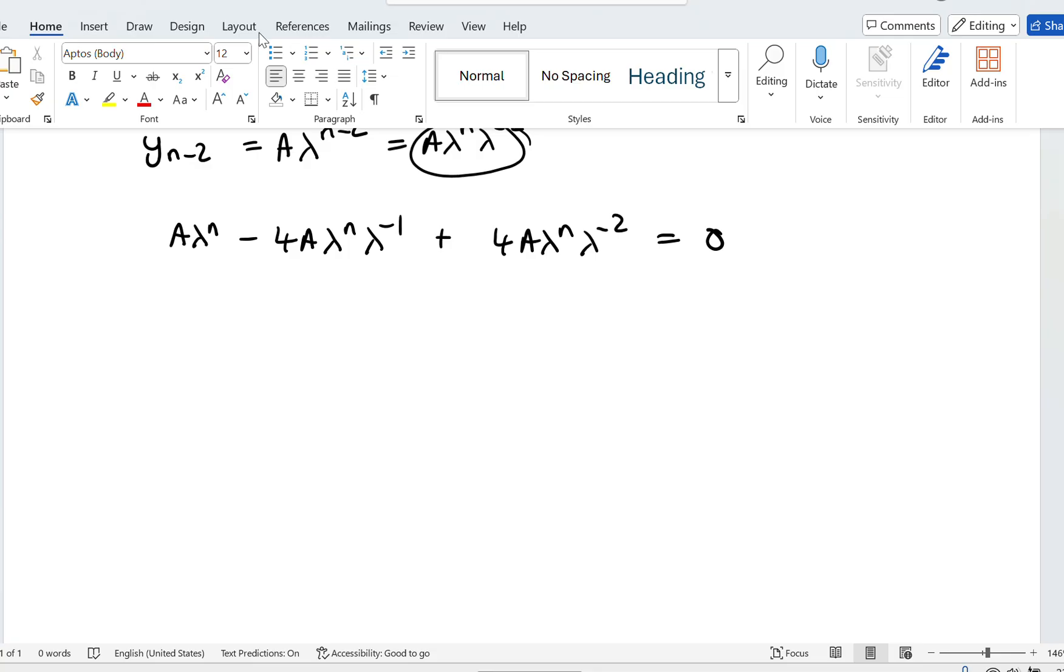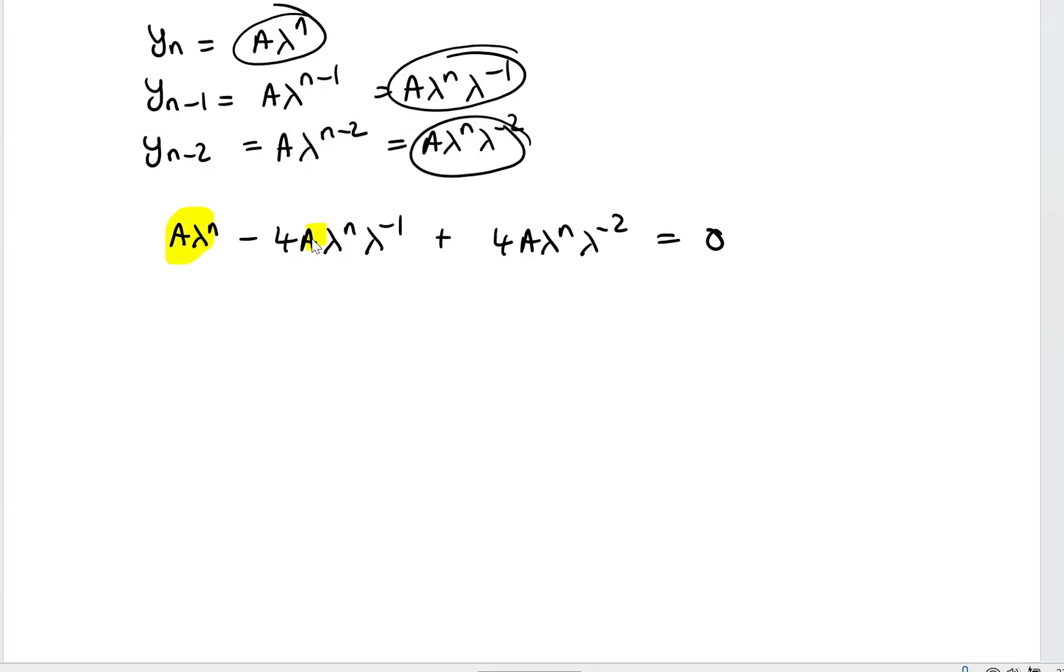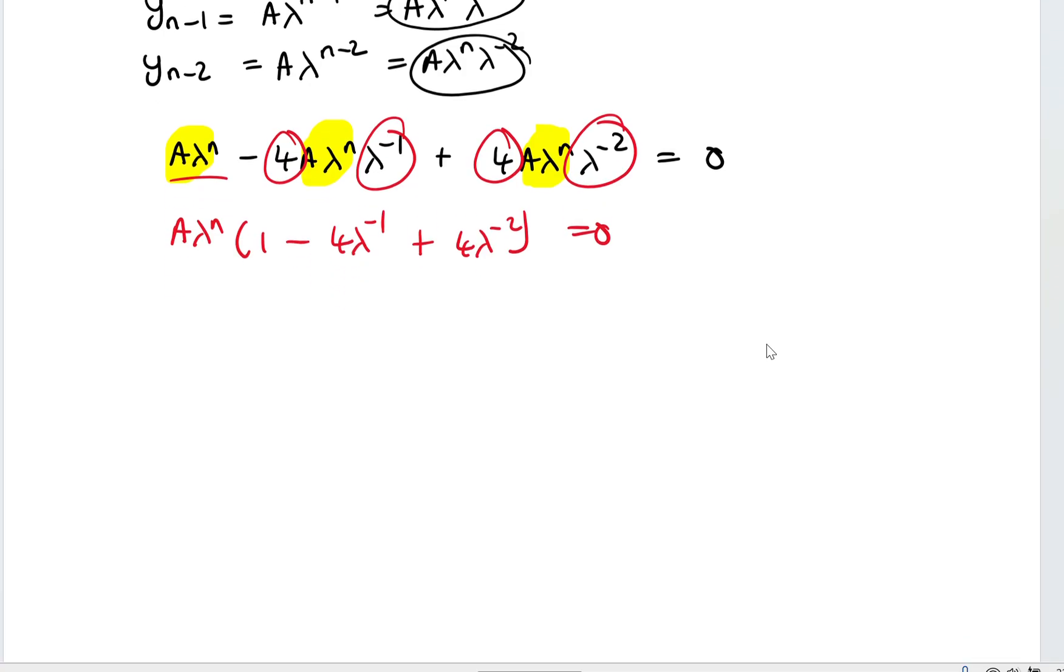Well, if you can check, I've got a common factor of A lambda^n in all these terms. So our terms are separated by a negative or an addition sign. We have got three terms. Now if I pull out A lambda^n as a common factor, here I'm left with 1, here I'm left with -4 lambda^(-1), and here I'm left with 4 lambda^(-2).